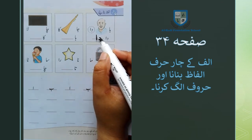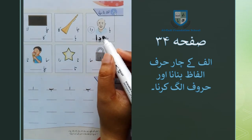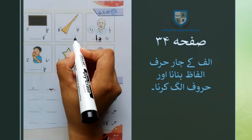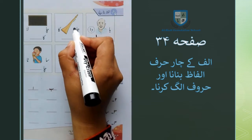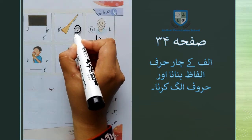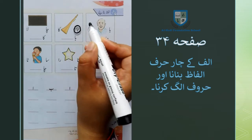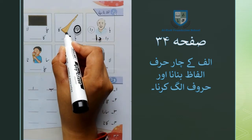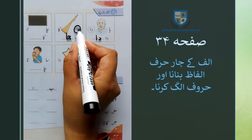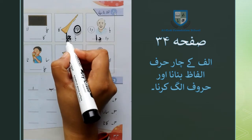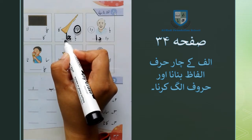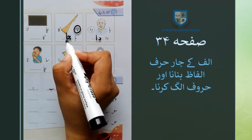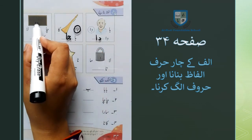آگے آپ کو ایک باجہ کی تصویر نظر آ رہی ہے۔ بے علیبہ کے ساتھ جب ہم جیم علیب جا لگاتے ہیں تو لفظ باجہ بنتا ہے۔ سب سے پہلے آپ نے جیم علیب جا کو سرکل کرنا ہے، اس کے بعد جیم علیب جا کو دی گئی خالی جگہ میں لکھ کر لفظ باجہ مکمل کرنا ہے۔ اس کے بعد آپ کو ایک کالا رنگ نظر آ رہا ہے۔